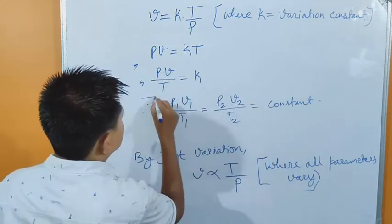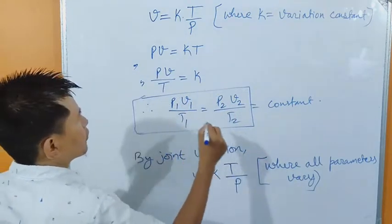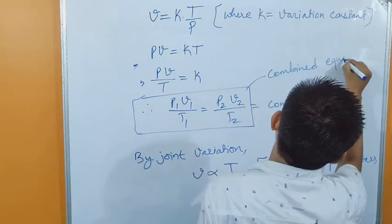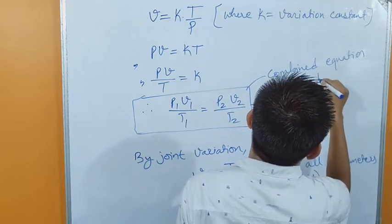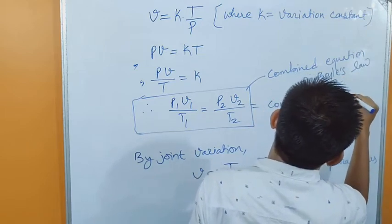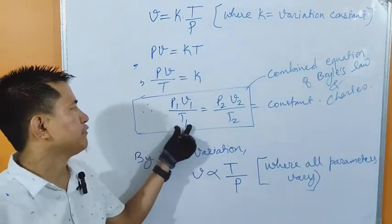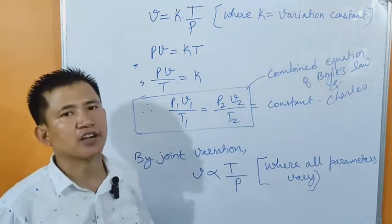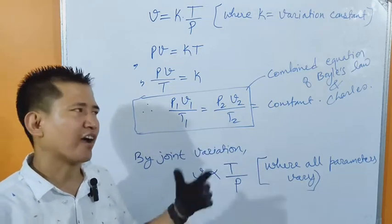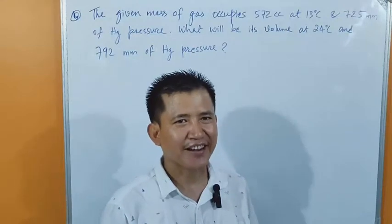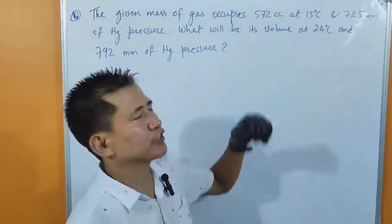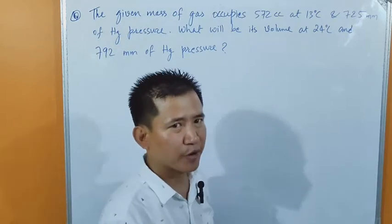Therefore we can write P1 V1 by T1 equals P2 V2 by T2 equals constant. So this is the combined equation of Boyle's Law and Charles' Law. P1 V1 by T1 equals P2 V2 by T2 is the combined equation of Boyle's Law and Charles' Law — you can also call this the gas equation, or ideal gas equation. To understand it, I have written a question here and we will solve it.